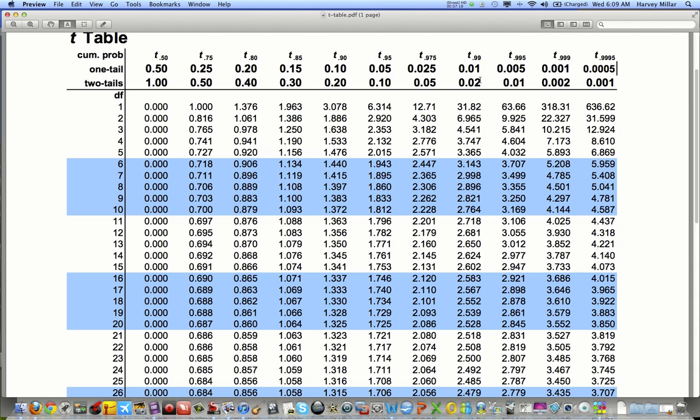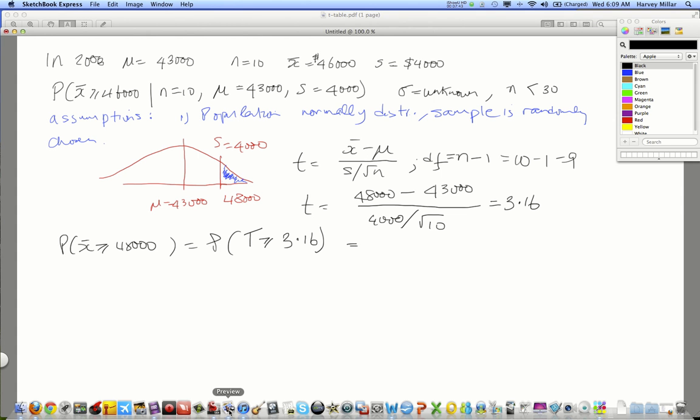So, here's one-tail probability. And 2.821 to 3.250, that brackets our value of 3.16, which means that our probability is somewhere between 1% and 0.5%, or between 0.005 and 0.01. So, that's what we have. So, we have to write our probability as an inequality.